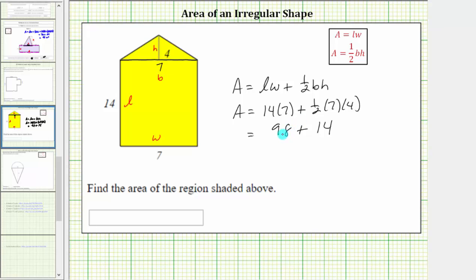The area is equal to 98 plus 14 square units, and 98 plus 14 equals 112. The area is 112 square units.